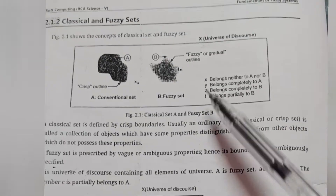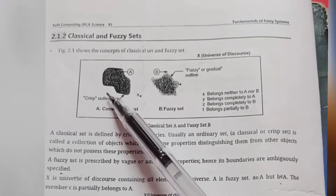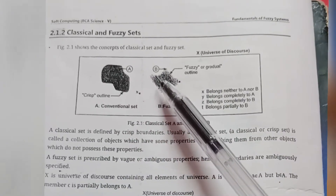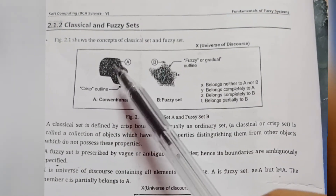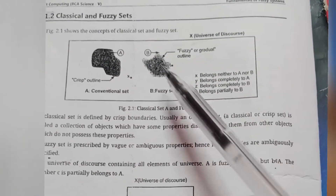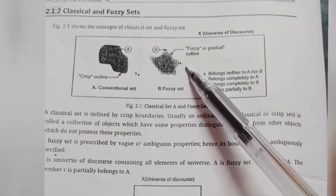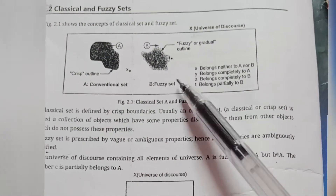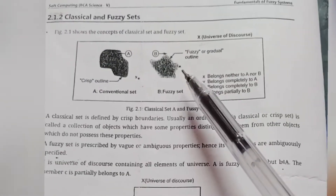Next is y — y belongs completely to A, so y is in set A. And z belongs completely to B, so z is in set B. Last one, t belongs to B. So this is the example where x is the universe of discourse and there are two sets, A and B. A is the conventional set and B is the fuzzy set, where the objects have some properties different from other objects.